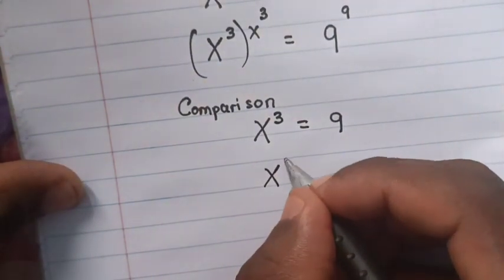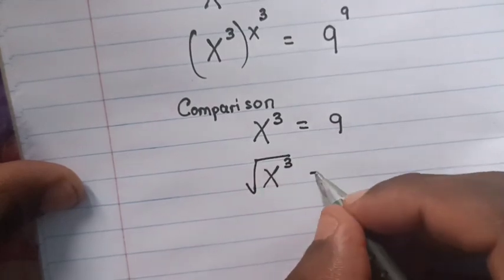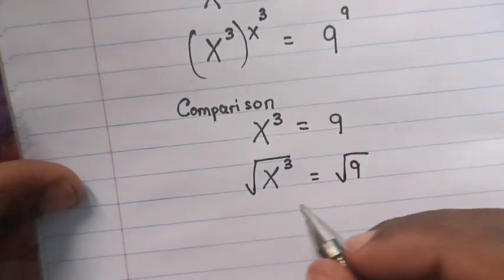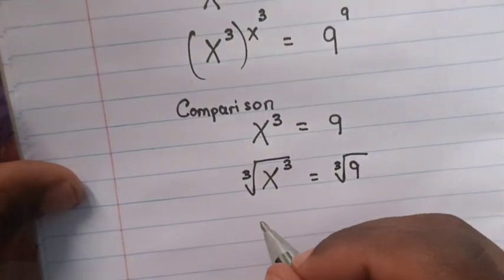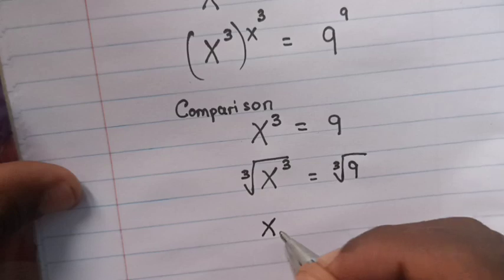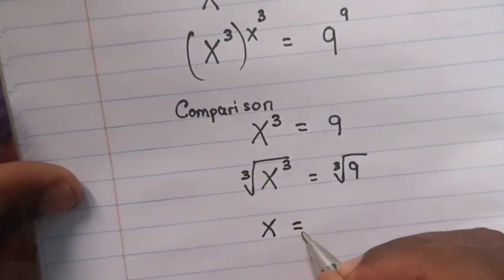Then we apply cube root in both sides. So x will equal 9 cube root. This is the value of x.